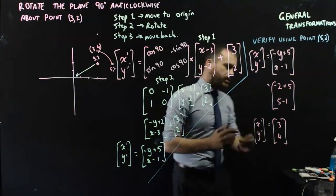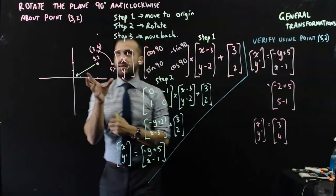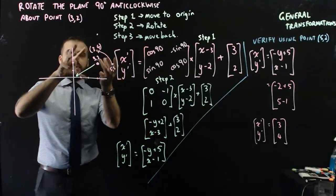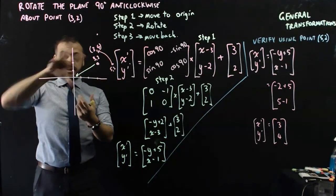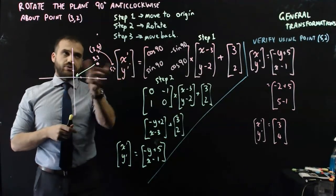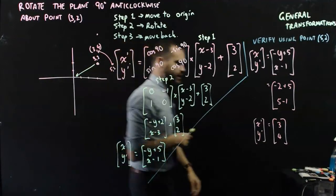Okay, so this is rotating a point about, or rotating the plane about a point. We move to the origin, we rotate, and then we move back again. Pretty cool.